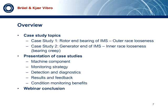Now we can begin the webinar. There are basically two case studies, and both deal with bearing looseness on the intermediate speed shaft of the gearbox, but at opposite ends. The potential consequential damage from either bearing fault is significant. We'll present the machine component affected, the monitoring strategy, then the detection and diagnostic techniques used. We'll look at the results and feedback, and finally give the condition monitoring benefits of detecting the fault early, followed by a conclusion.